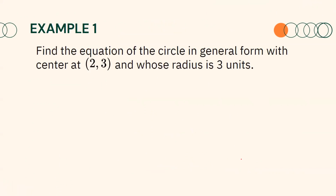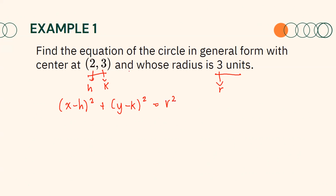Let us have this first example. Find the equation of the circle in general form with center at (2, 3) and whose radius is 3 units. Since the center and radius are already given, we simply substitute the values of H, K, and R into our standard form: (X minus H) squared plus (Y minus K) squared equals R squared. Substituting, we get (X minus 2) squared plus (Y minus 3) squared equals 3 squared.